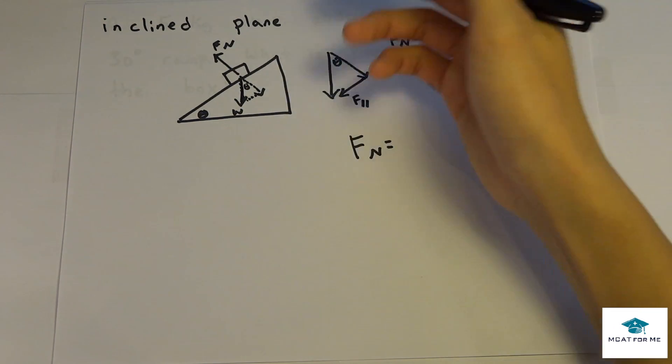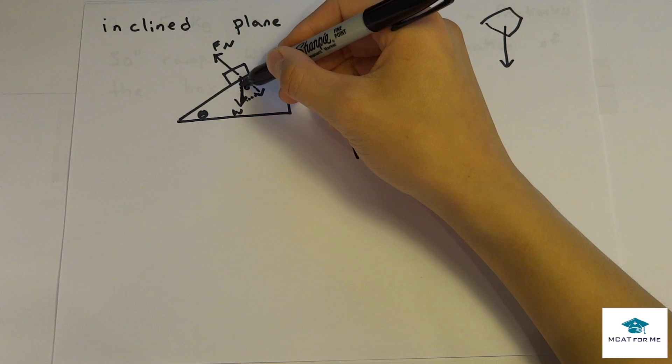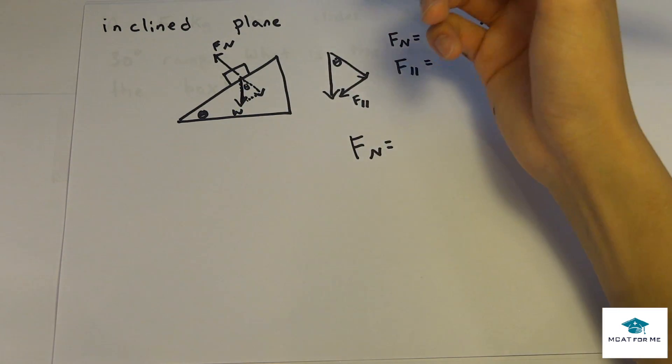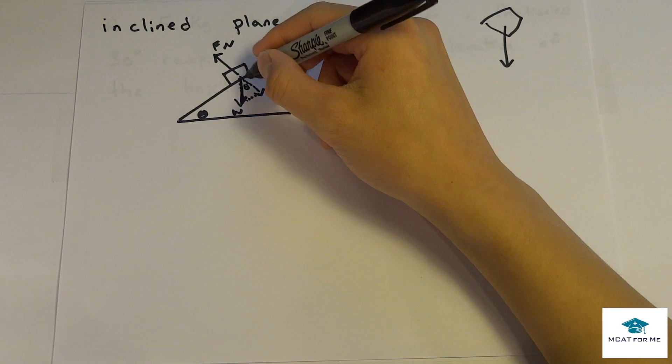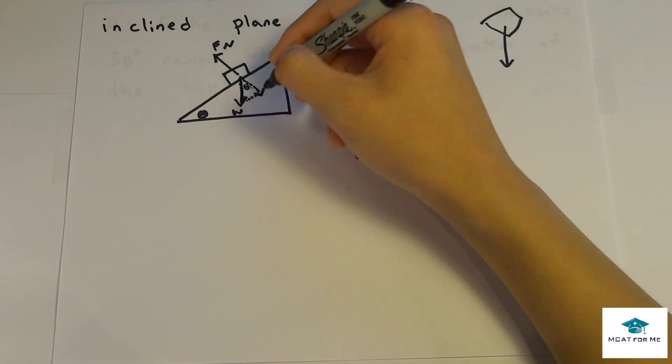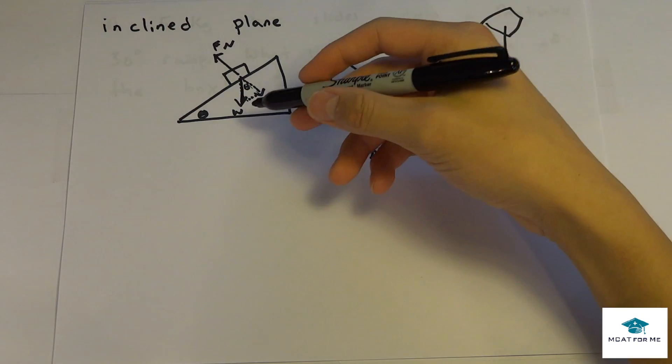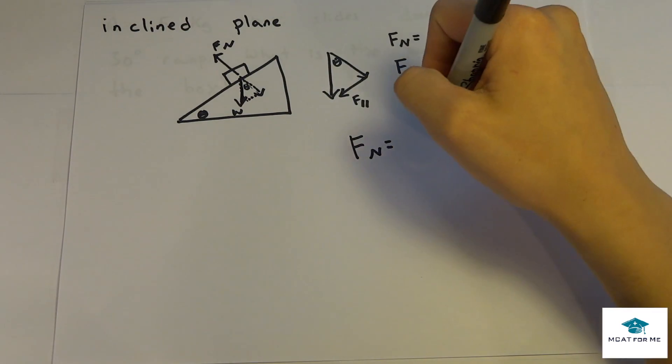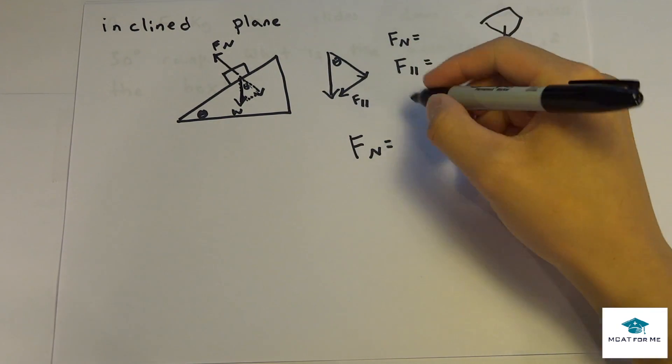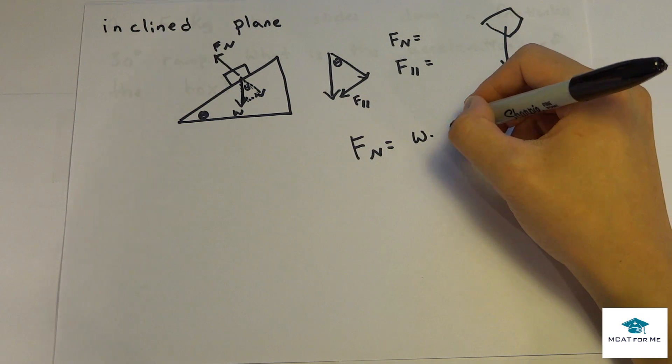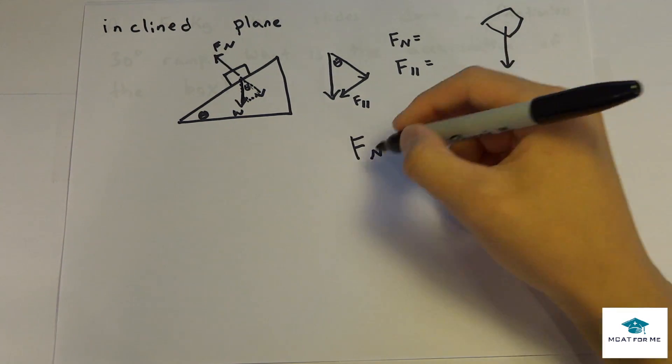We always draw it with theta like that, and we draw the hypotenuse is going to be the weight, and we draw the normal force is going to be the same long portion right there. You guys kind of have to just figure that out how you would draw that on your own, but we know that the normal force is always going to be the weight times cosine theta.